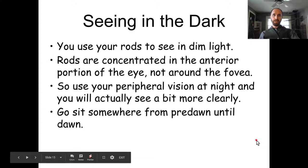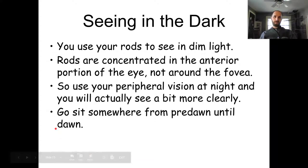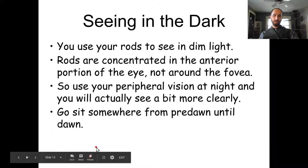In the dark you'll mostly use your rods, which are concentrated in the anterior portion of your eye. Don't try to look directly at things at night — you won't see as well. A cool thing you can do is sit outside pre-dawn and watch colors start coming in as the sun rises — great to observe while camping.